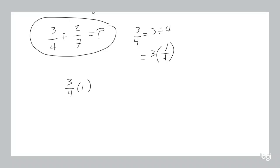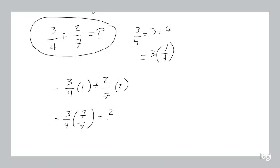You can multiply anything by one because multiplying anything by one doesn't change it. And you can write a one in a different way — you could write it as a stick, or you could write 7 over 7. That's also a way of writing 1 because 7 divided by 7 is 1. You could also write 1 as 4 over 4, because 4 divided by 4 is 1.